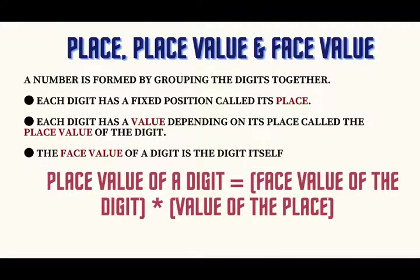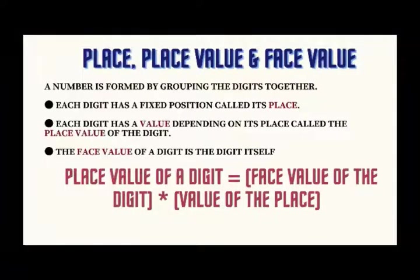Place, Place Value, or Face Value. A number is formed by grouping the digits together. Each digit has a fixed position called its place. Each digit has a value depending on its place called the place value of the digit. The face value of a digit is the digit itself. Place value of a digit equals face value of the digit times value of the place.